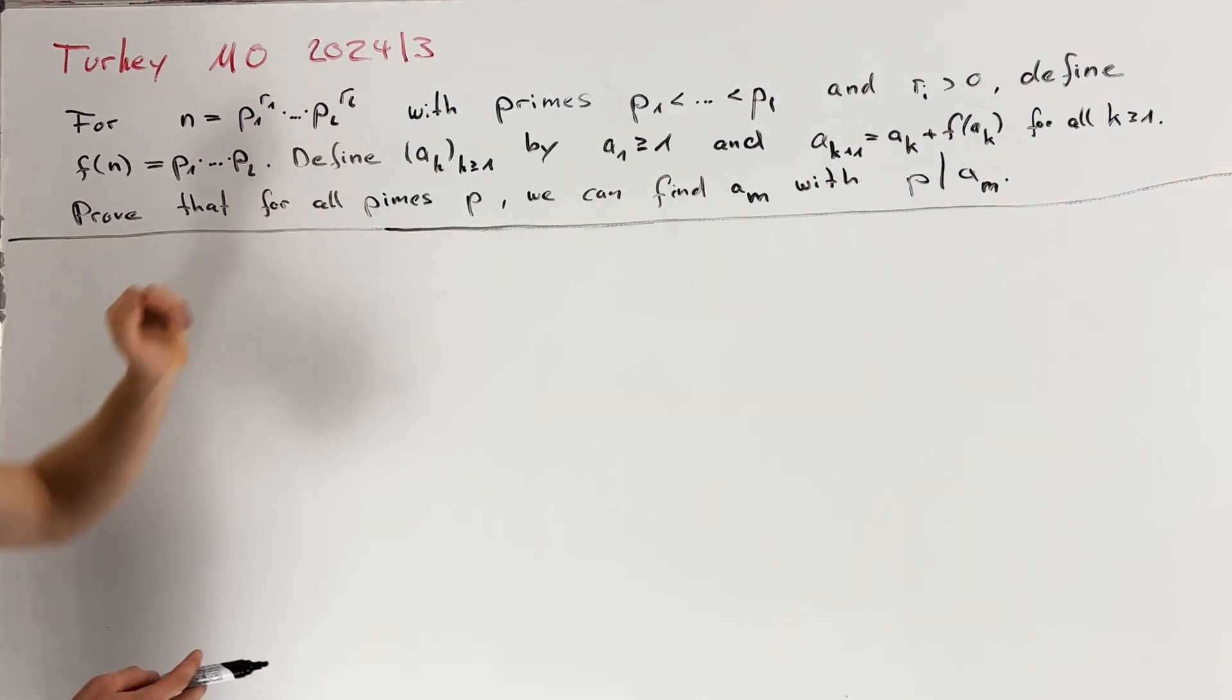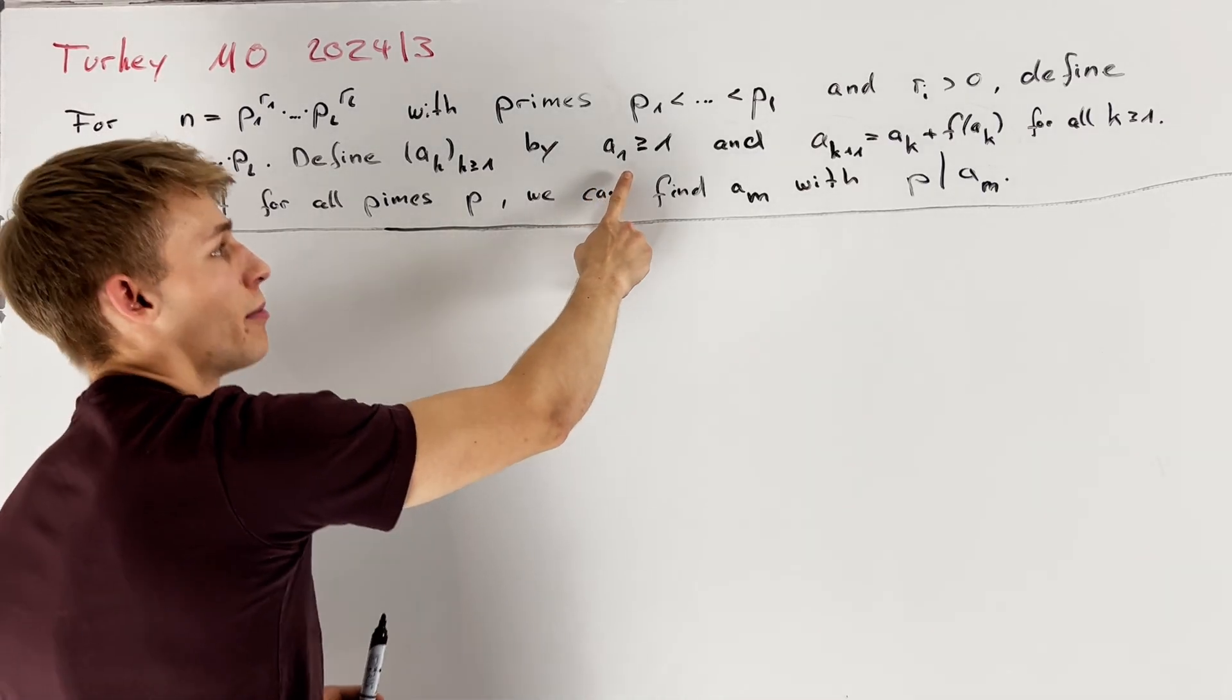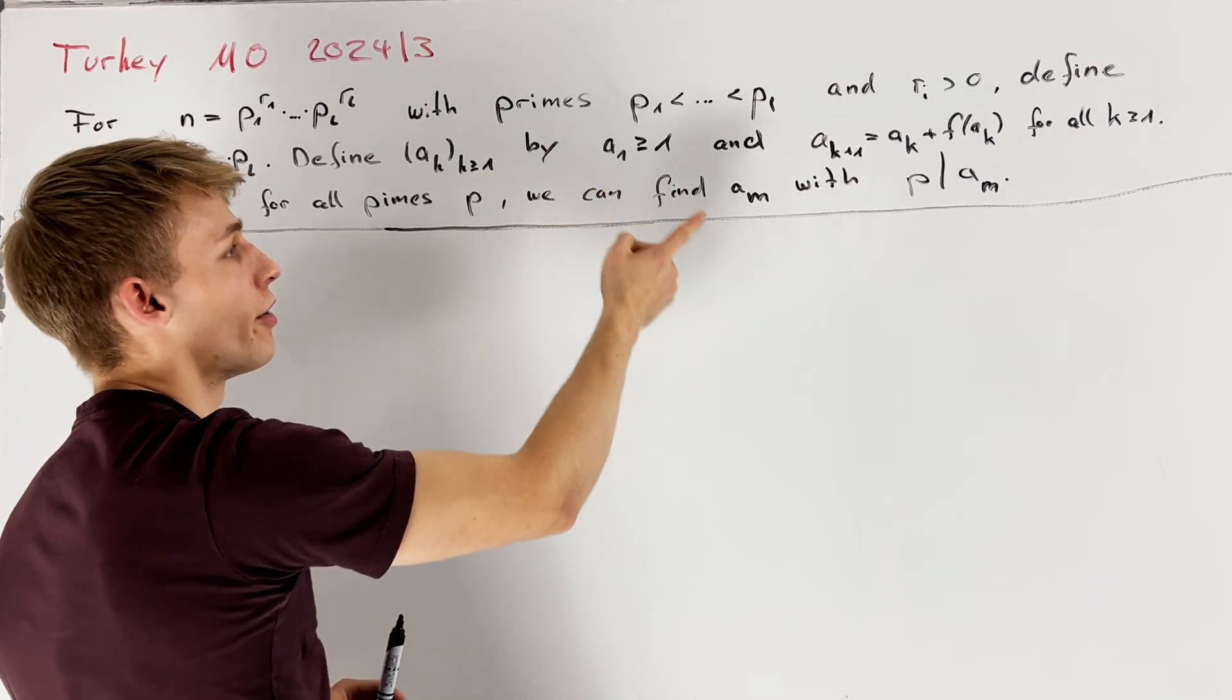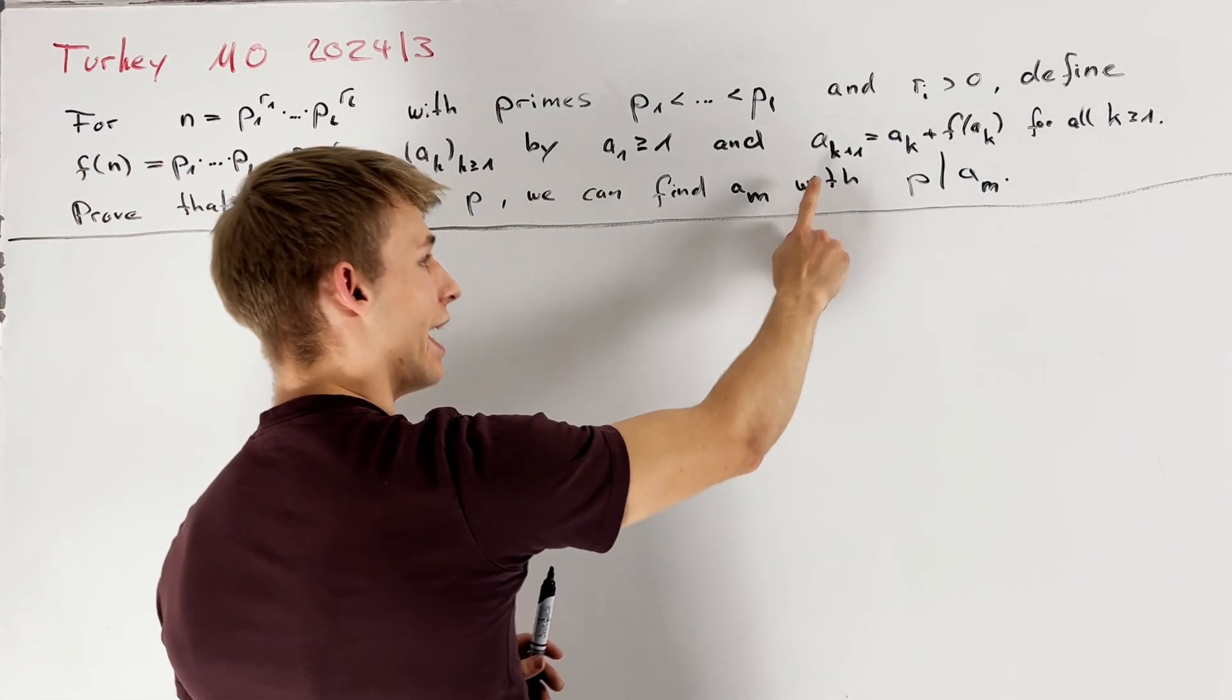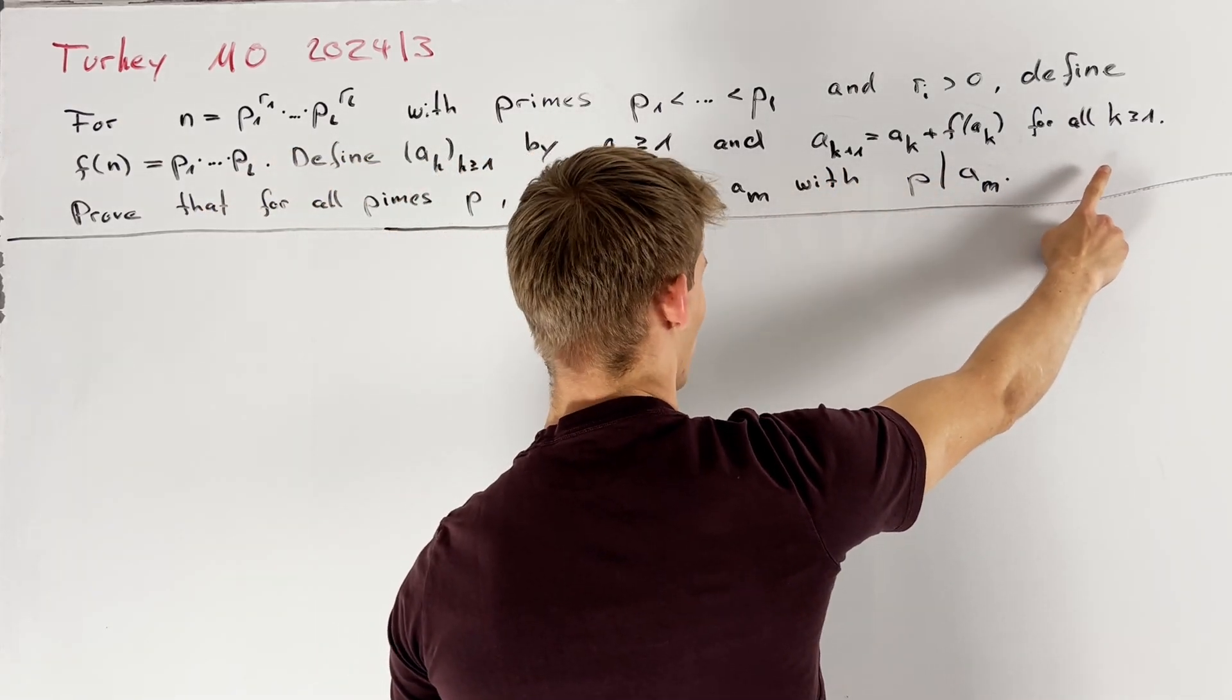Now we want to define a sequence a_k of positive integers in the following way. a_1 is an arbitrary positive integer and now we recursively define a_{k+1} as a_k plus f of a_k for all k greater than or equal to 1.